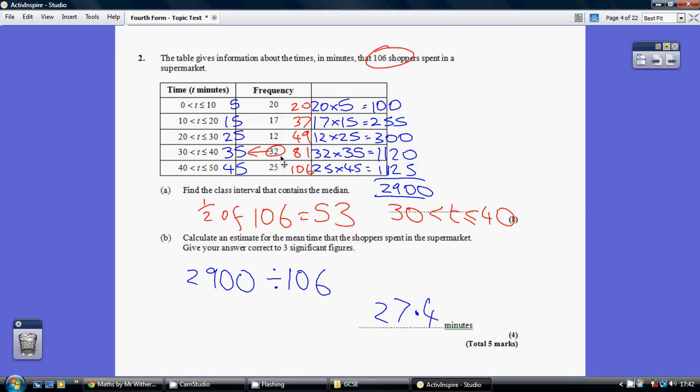Now, here are the shoppers. So, if we do a running total of these shoppers, which I've done here in red. 20, then 20 add 17 is 37. Then add 12 is 49. Add 32 is 81.